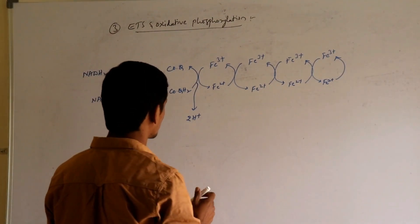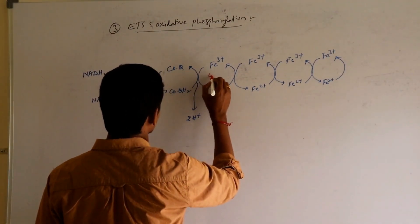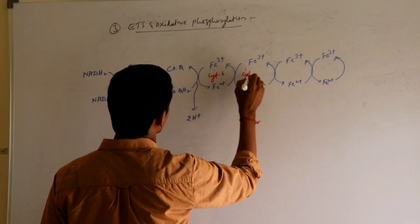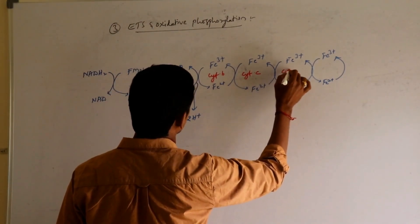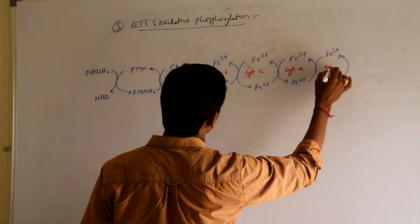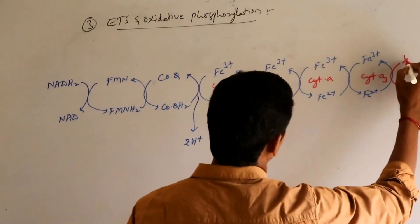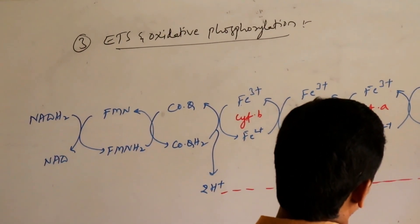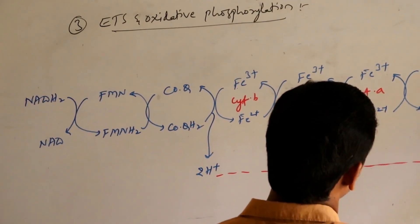The electron carriers involved here are cytochrome B, cytochrome C, cytochrome A, and cytochrome A3. Finally, oxygen is involved. The 2H+ is accepted by oxygen, leading to the formation of water.